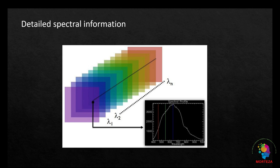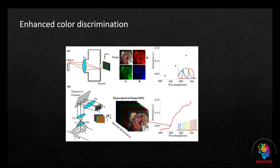The second benefit is enhanced color discrimination. With hyperspectral imaging it's possible to distinguish between objects or materials that may appear similar in color but have distinct spectral signatures. This capability is particularly useful in applications such as art restoration, food quality assessment, and manufacturing where precise color discrimination is essential for quality control and analysis.